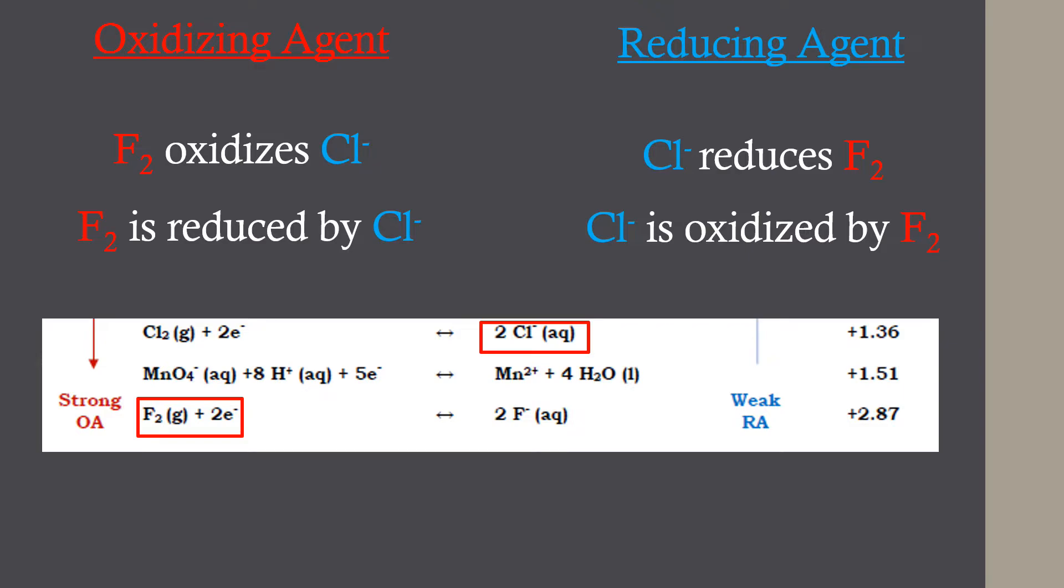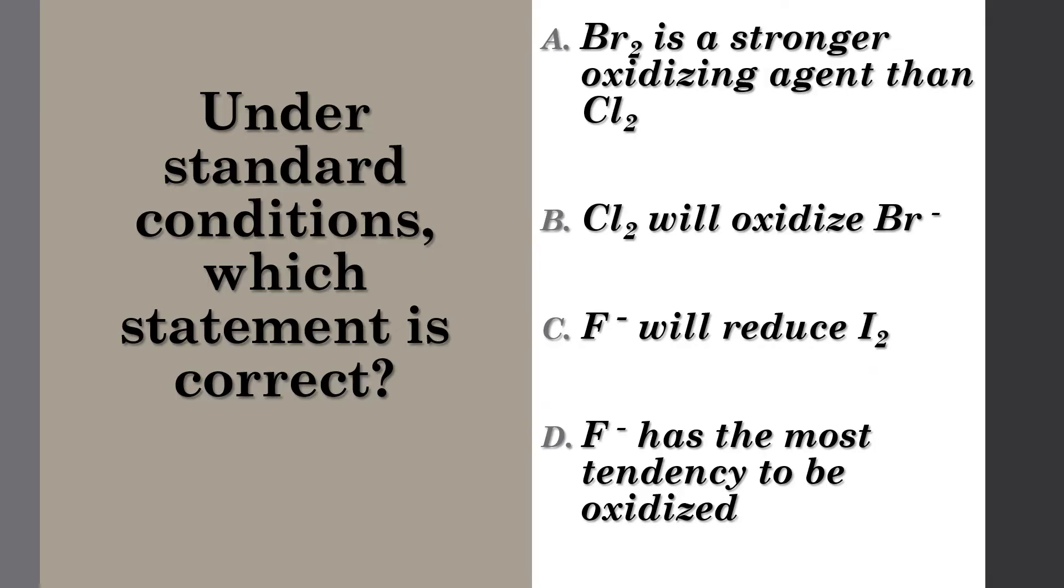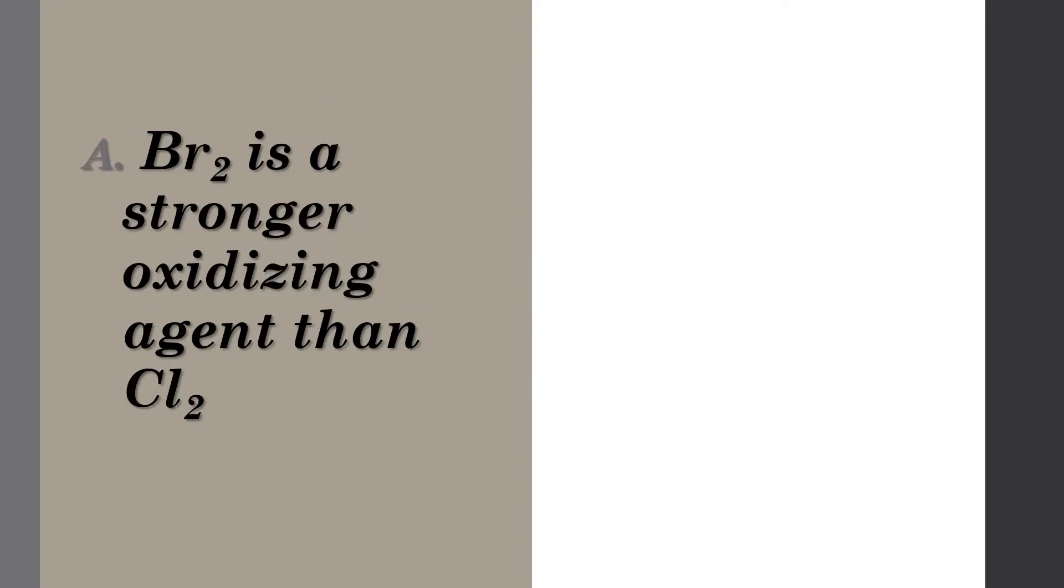Now let us come back to the question from earlier. We will now break down each option and see which one is correct. So option A, bromine is a stronger oxidizing agent than chlorine. Let's look at the table.